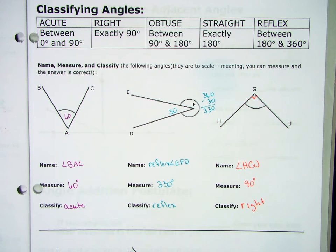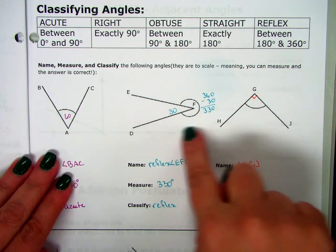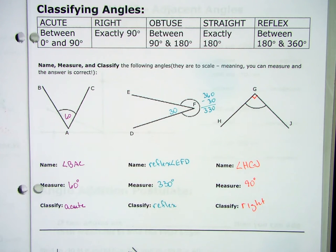And then we talked about the different types of angles and you've seen all of them before except the last two. We added on a straight angle. It looks like a straight line. It's 180 degrees.